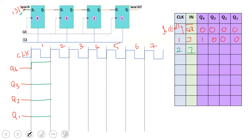On the second clock pulse: Q4 is 1, and since D3 gets the value of Q4, Q3 becomes 1. The input shift-in is 0, so Q2 is 0 and Q1 is 0. Therefore after the second clock pulse, Q4 is 1, Q3 is 1, Q2 is 0, Q1 is 0.